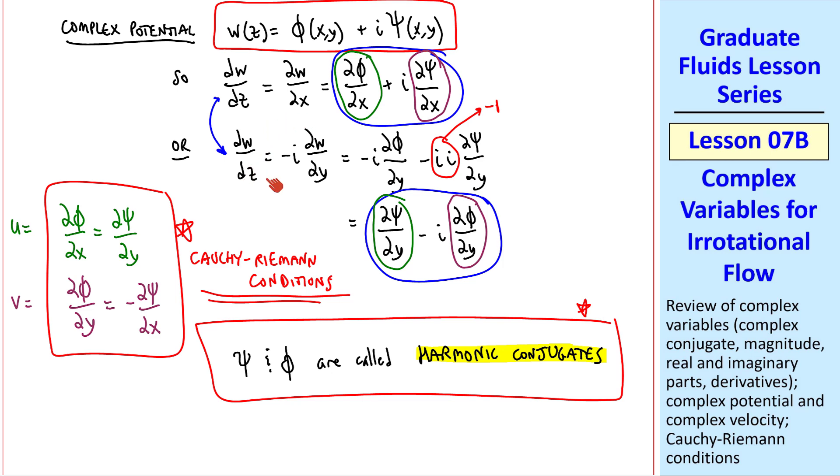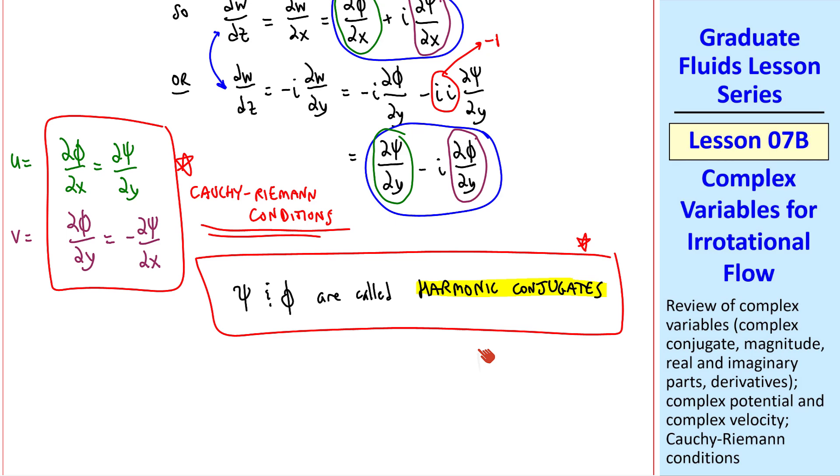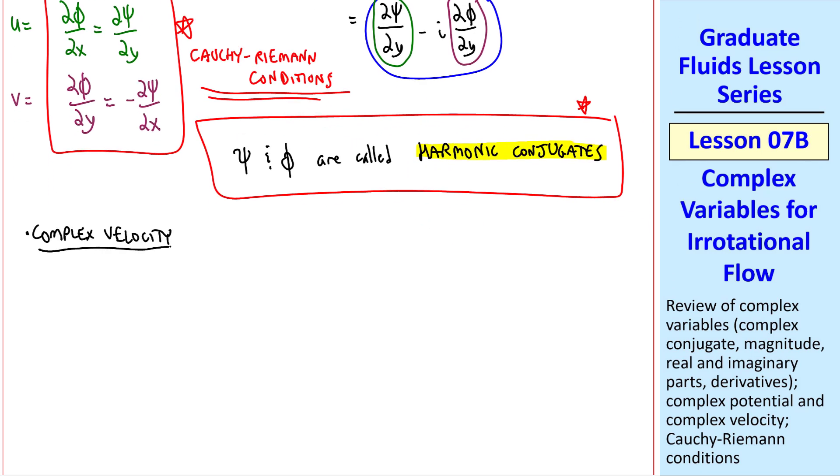Let's define, then, the complex velocity, which is simply dw dz, which turns out to be u from up here, minus i times v from up here. This is the complex velocity, which is simply the derivative of the complex potential. I note again that w is complex, but both u and v are real.